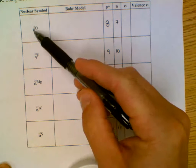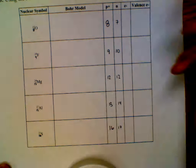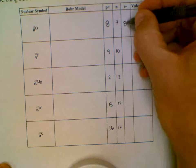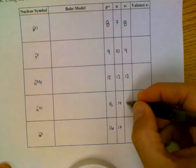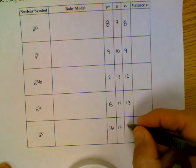The electrons are bottom left minus top right. 8 minus 0 is 8. 9 minus 0 is 9. 12 minus 0 is 12. 13 minus 0 is 13. 16 minus 0 is 16.